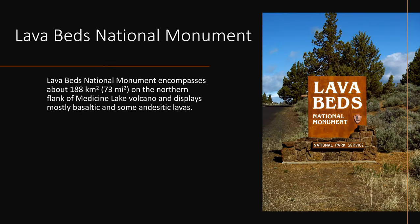Lava Beds National Monument encompasses about 73 square miles on the northern flank of Medicine Lake volcano and displays mostly basaltic and some andesitic lavas.